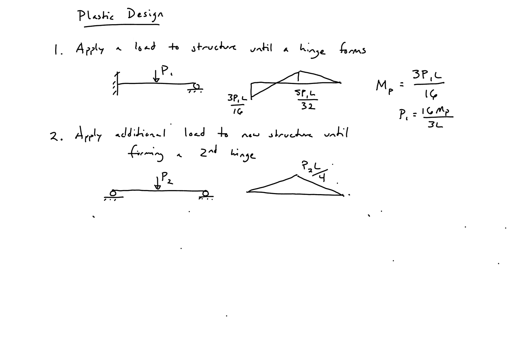We want to apply load until we have a plastic moment at the center. We have the moment that was already there from our first loading — 5P1L over 32 — and now we have this additional load, which is P2L over 4. We can now solve for P2. I'll let you solve for P2.